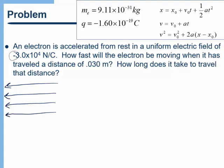How do we create a constant electric field? If we take two parallel plates — picture two parallel pieces of paper held a distance apart — and charge them so that one is positive and the other is negative, that will create a uniform electric field in that region of space.